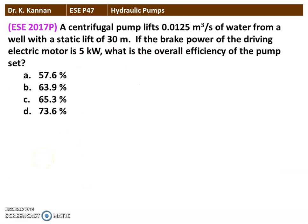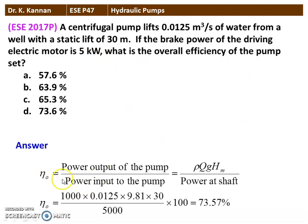The next question from the 2017 question paper: a centrifugal pump lifts 0.0125 m³/s of water from a well with a static head of 30 meters. If the brake power of the driving electrical motor is 5 kilowatt, what is the overall efficiency of the pump? Overall efficiency = power output / power input = ρ·Q·g·H / shaft power = 1000 × 0.0125 × 9.81 × 30 / 5000 × 100 = 73.57%. The correct option is 73.6%, Option D.